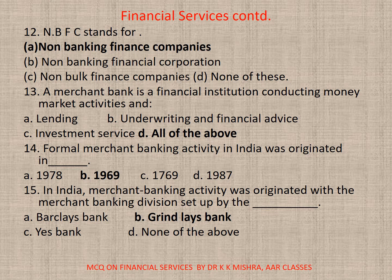Question 14. Formal merchant banking activity in India was originated in blank. A. 1978. B. 1969. C. 1769. D. 1987. Correct option is B. 1969.